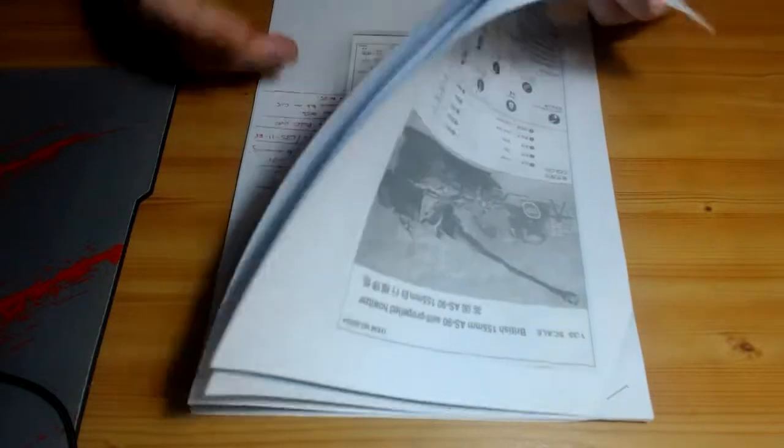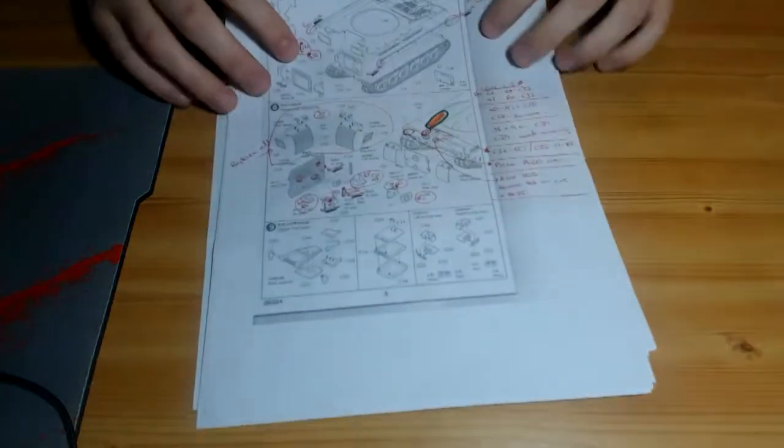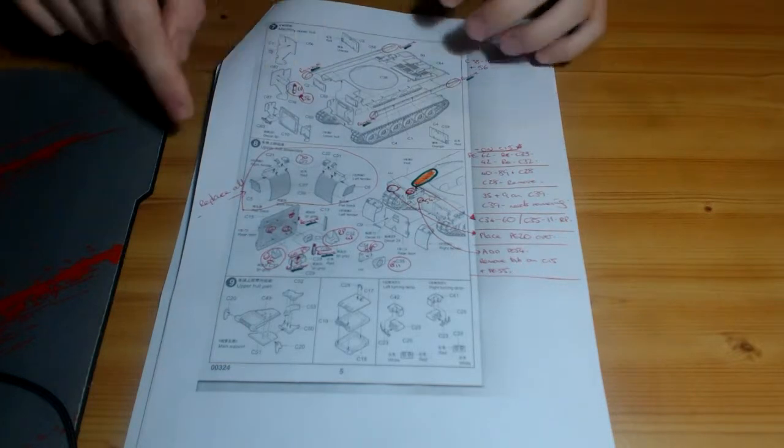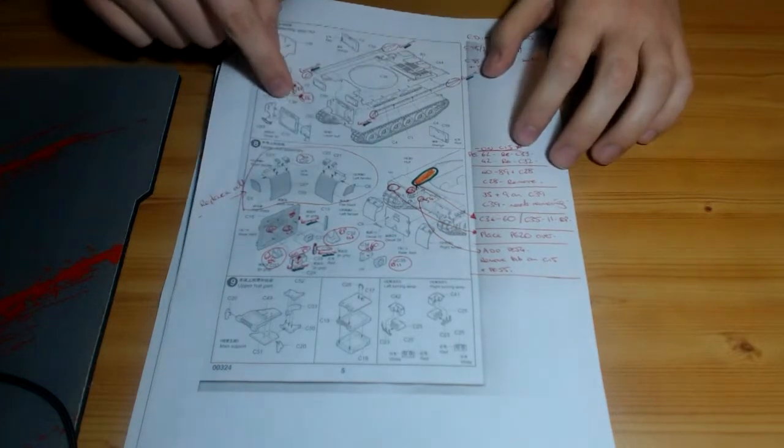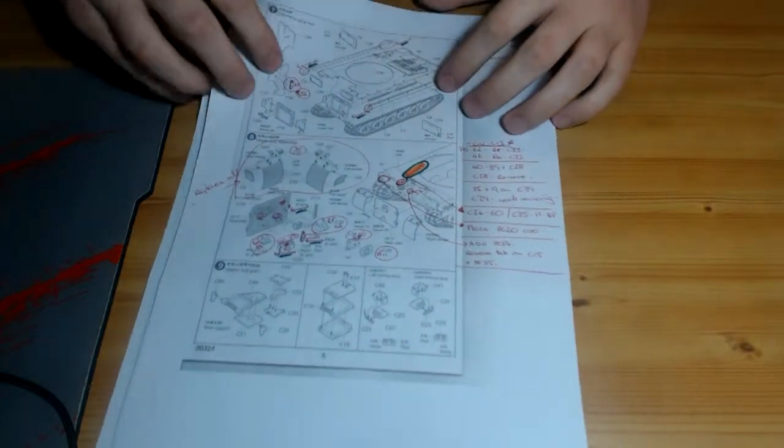So I decided that I'd print it off and start looking for the pieces in the instructions and then corresponding them to the photo-etch, giving them the numbers that they've got on the actual photo-etch sheet.